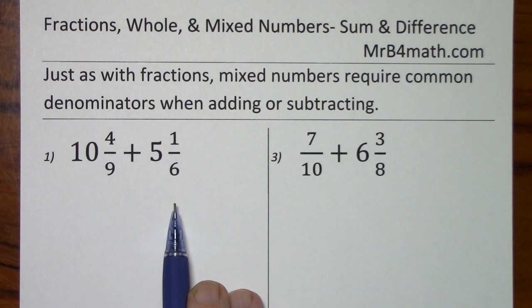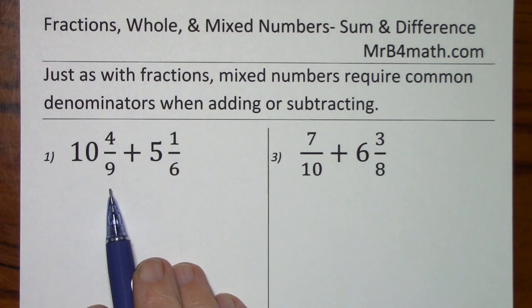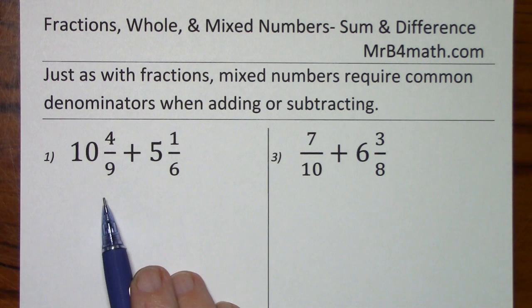Looking at our first problem here, we'll need to find common denominators. Look at multiples of the biggest, 9, then 18. 6 goes into 18, so 18 is our common denominator.